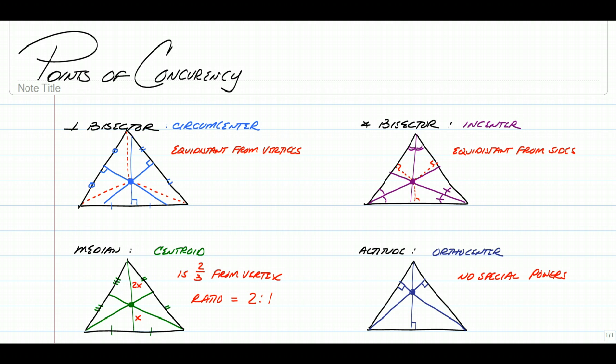When medians intersect in the middle of a circle, they create a point known as the centroid. And the centroid's special power is the fact that it's two-thirds from the vertex.